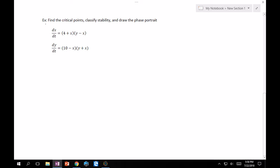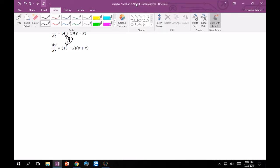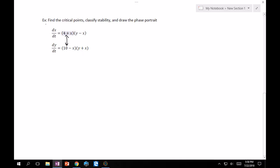Step I is find critical points. I'm going to set up four cases. Case 1: 4 plus x equals 0 and 10 minus x equals 0. Clearly this cannot happen. One case has to be negative 4 and the other has to be 10, so no critical points possible from here.